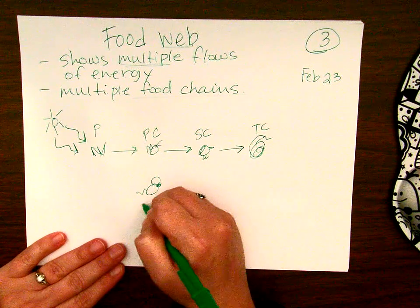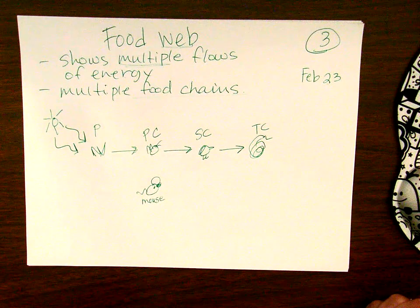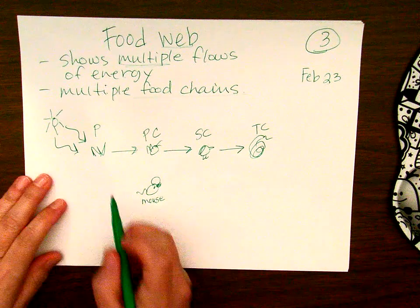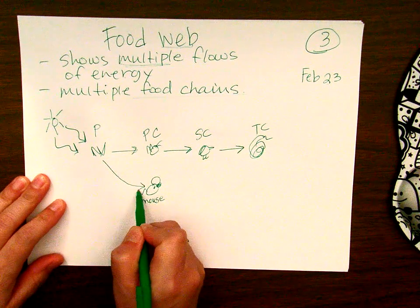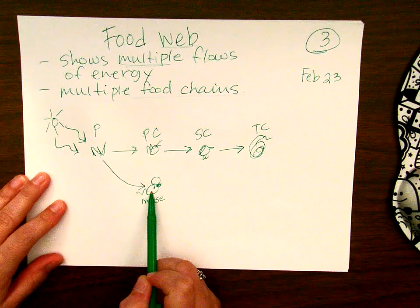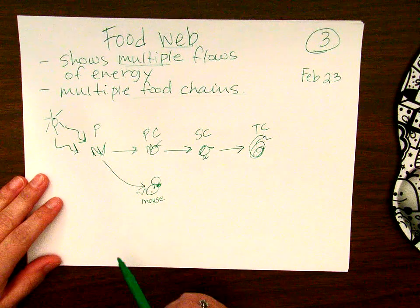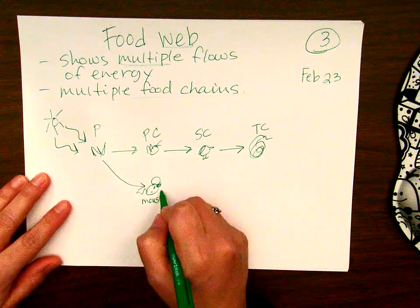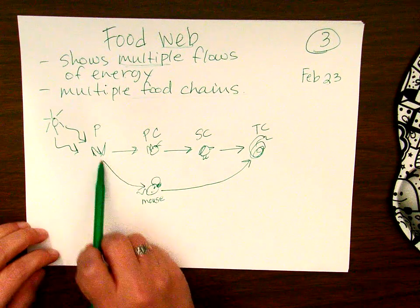Let's add a mouse. Because he's new, I'm going to label him so you know what it is. Mice like to eat plants, so I'm going to put an arrow towards the mouse from the plant, because the mouse is eating the plant and the energy from that plant goes into his belly so he can use it for energy.